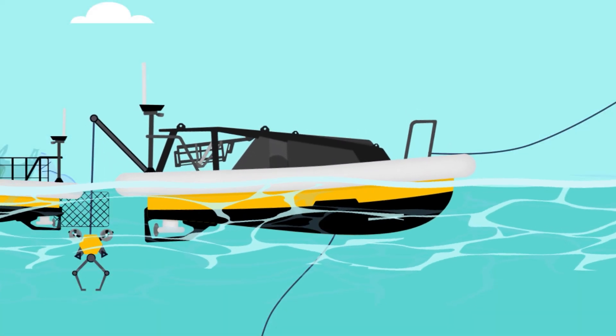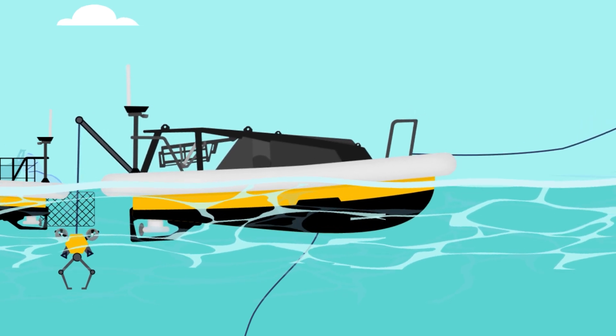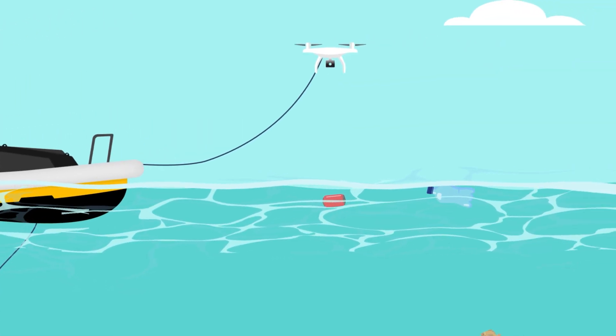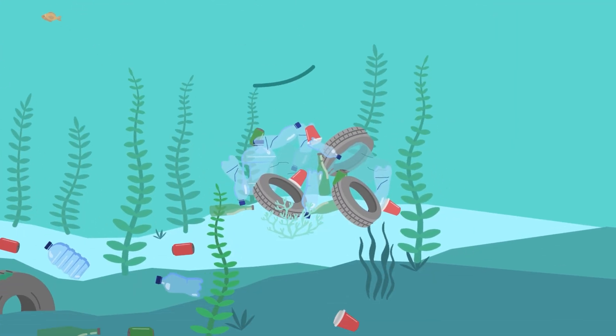An unmanned surface vehicle, called the SeaCat, acts as the system's hub. Together with a flying drone, they perform a first scan of the area and identify litter hotspots.